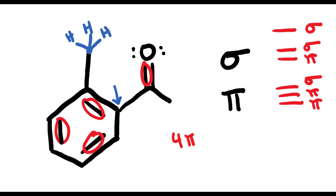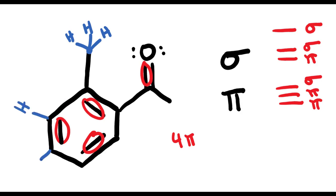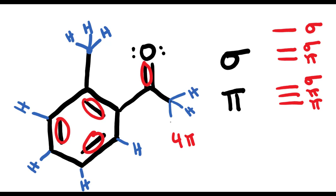We can say the same thing for this carbon right here — it has no hydrogens attached. This carbon, though, has a double bond and a single bond for a total of three bonds, which tells us that it must also have a hydrogen. The same would be true for this carbon, and this carbon, and this carbon. Then we check here and find that this carbon has a double bond and two single bonds for a total of four bonds, so that carbon has no hydrogens. But all the way at the end, we have a carbon with three hydrogens, since this carbon only has one single bond, and we know it must have a total of four bonds.